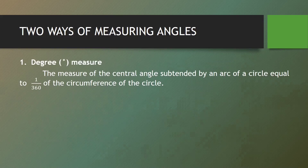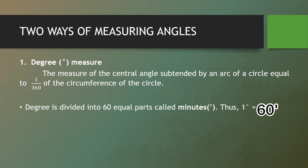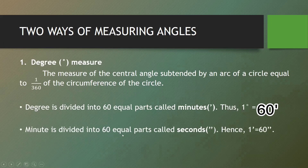There are two ways of measuring angles. First is degree measure — the measure of the central angle subtended by an arc of a circle equal to 1/360 of the circumference. Note that a degree is divided into 60 equal parts called minutes, so 1 degree equals 60 minutes, and a minute is divided into 60 equal parts called seconds, so 1 minute equals 60 seconds.